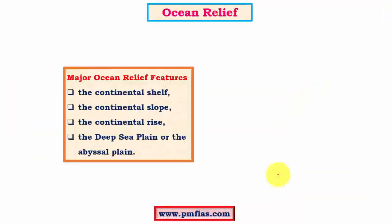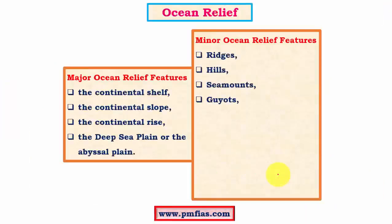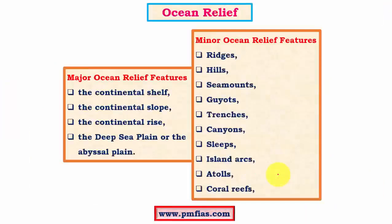Now let us look at various ocean relief features — there are minor ones and major ones. The major ones include continental shelf, slope, and rise, and then we have the deep sea plain which is also called the abyssal plain. The minor features include abyssal hills like seamounts and guyots, mid-oceanic ridges, and then trenches at the converging boundary. There are also various features like canyons and atolls, coral reefs, etc.